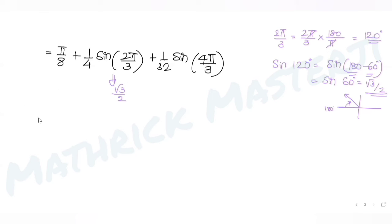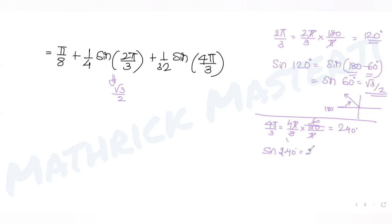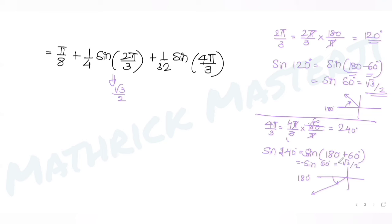For 4π/3: converting to degrees gives (4 × 180)/3 = 240°. So sin(240°) = sin(180° + 60°). Since 180° + θ is in the third quadrant where sine is negative, we get −sin(60°) = −√3/2.